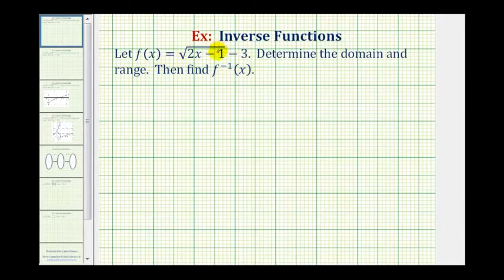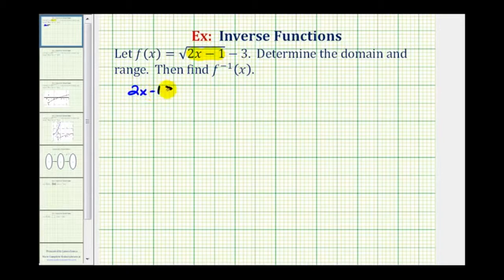Because our function contains a square root, in order for the function value to be real, the number underneath the square root — or the radicand — which in this case is two x minus one, can't be negative. This means two x minus one must be greater than or equal to zero, and this restriction will help us find our domain.